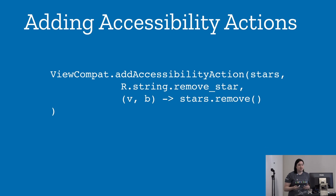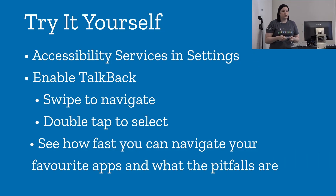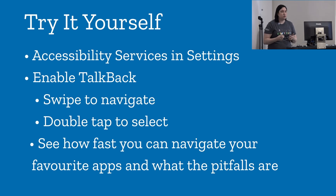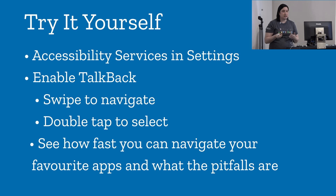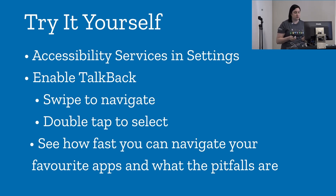For custom interactions, there's a function called addAccessibilityAction where you give a view some assistive text and define what it does. You can also try your app yourself — go into Settings, use the Accessibility section, and enable TalkBack or Switch. TalkBack will read all text on screen; with Switch you can use your volume controls to navigate. With TalkBack, swipe to navigate forward or backward and double-tap to select. Navigate through your favorite apps and see what the pitfalls are.